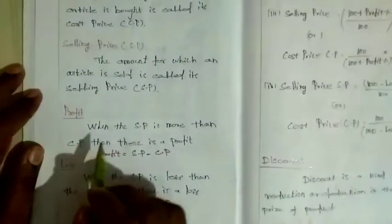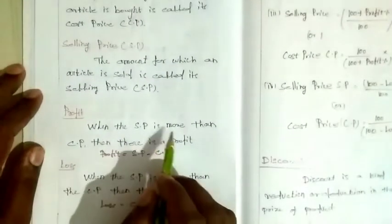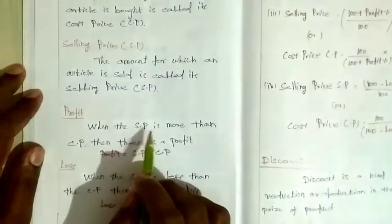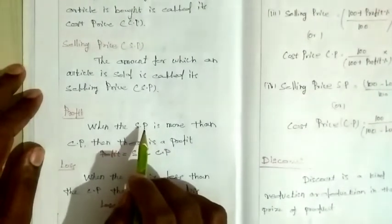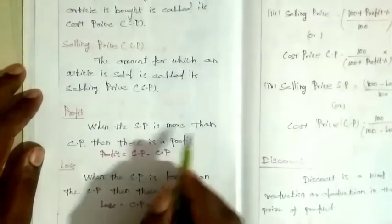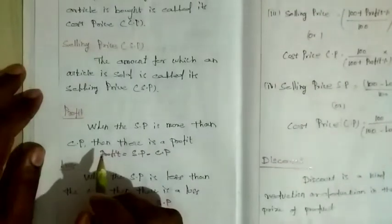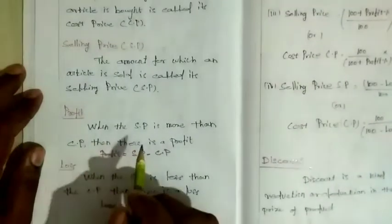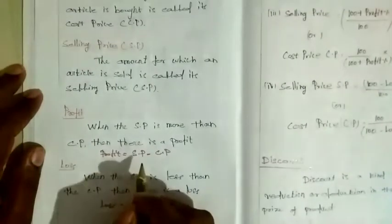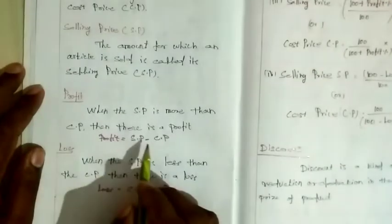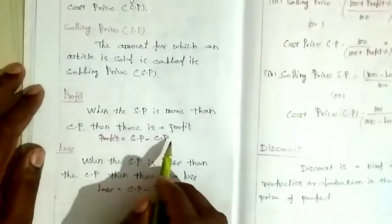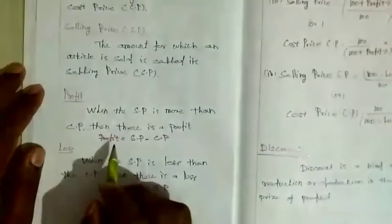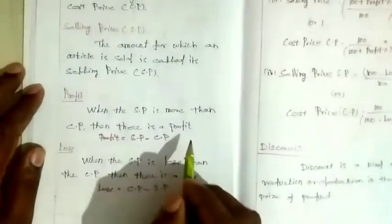Profit: when the selling price (SP) is more than the cost price (CP), there is a profit. The formula is: Profit = SP minus CP.